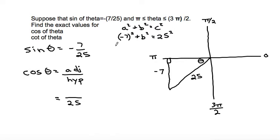7 squared is 49 plus b squared is equal to 25 squared is 625. So this would be 625 on this side. We would subtract 49 on both sides to get that b squared is equal to 576.